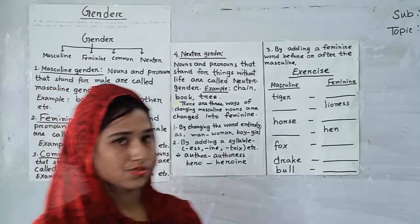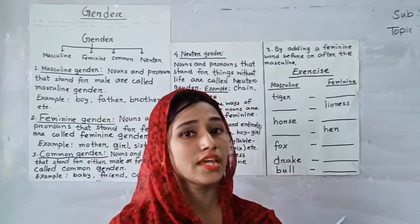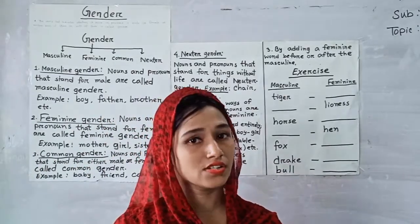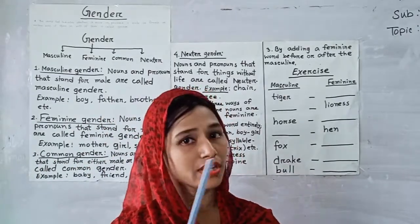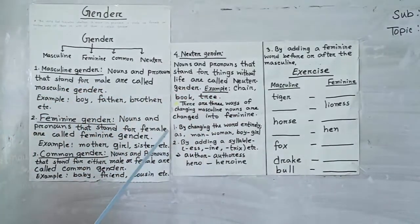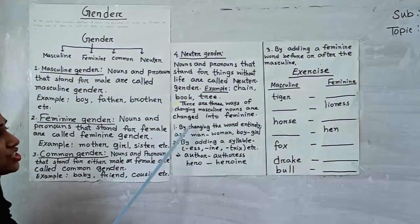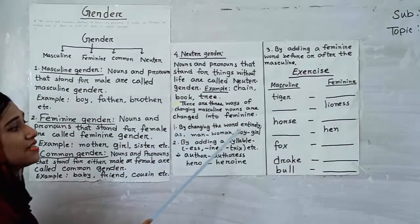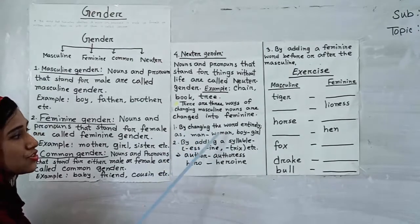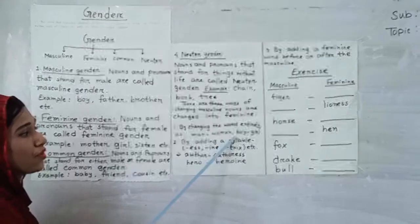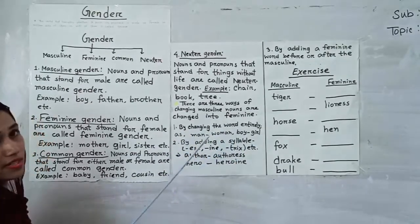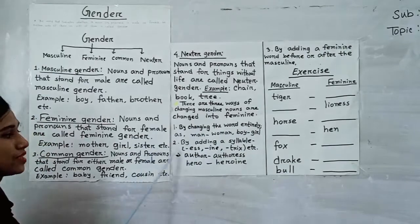Dear students, we can change gender from masculine to feminine by three ways. Number 1, by changing the word entirely — for example, man to woman, boy to girl. Okay, like this way.